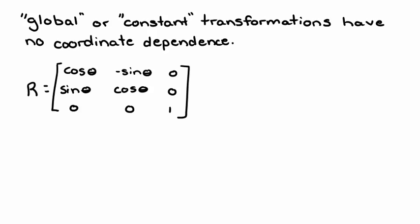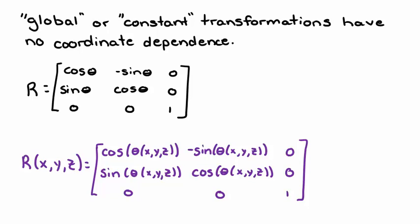For example, we've looked at this rotation matrix, where we do the same rotation by the same angle at every point in space. But now imagine if we had some matrix where the angle by which we rotated had some x, y, and z dependence. We still have one matrix, but the theta that we use is now a function of our coordinates. Something like this is what we call a local transformation.